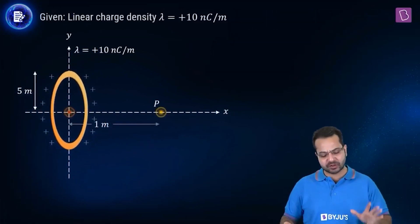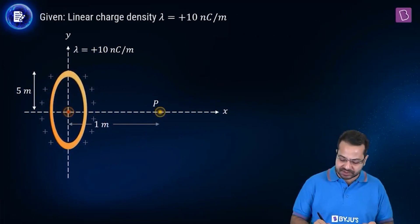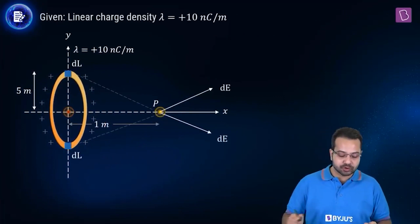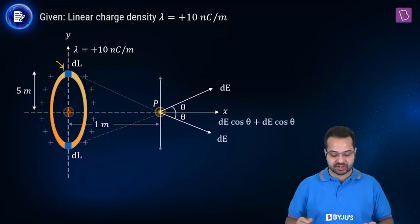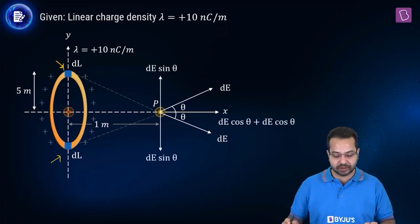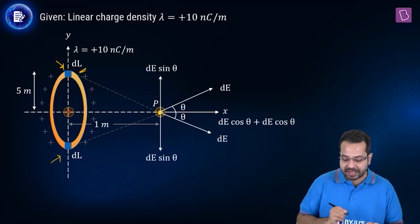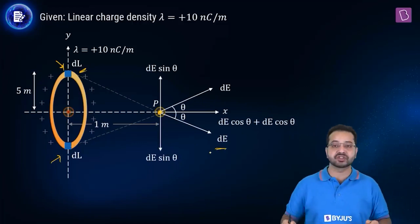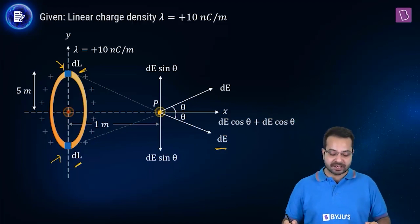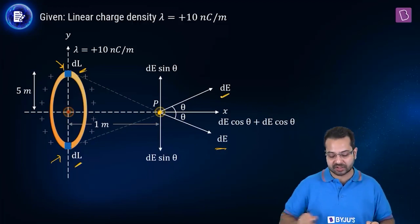We can solve this very simply using a symmetry argument. We choose two small charge elements which are diametrically opposite. Due to this dL, the electric field at this point would be in one direction dE, and due to the opposite dL, the electric field at this point is going to be in the corresponding direction dE.